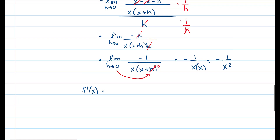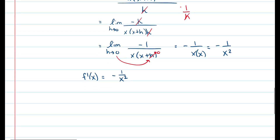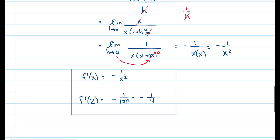After all of that algebra, we get that f prime of x is equal to negative one over x squared. Now we find f prime of two by plugging two into the derivative, giving us negative one over two squared, which is negative one fourth. So the derivative is negative one over x squared and f prime of two is negative one fourth.